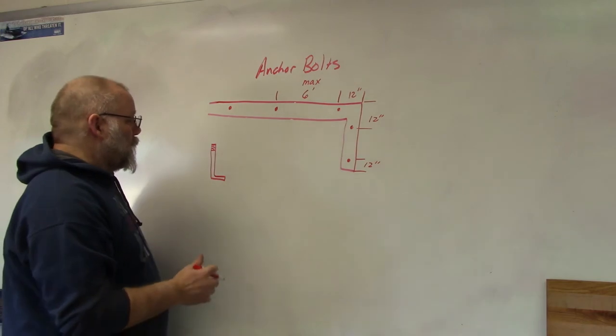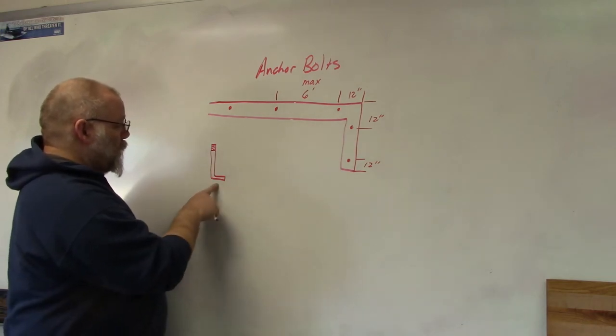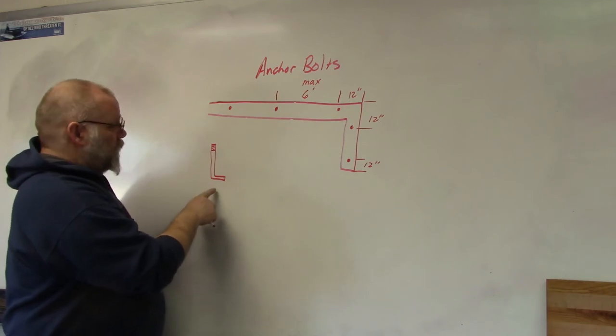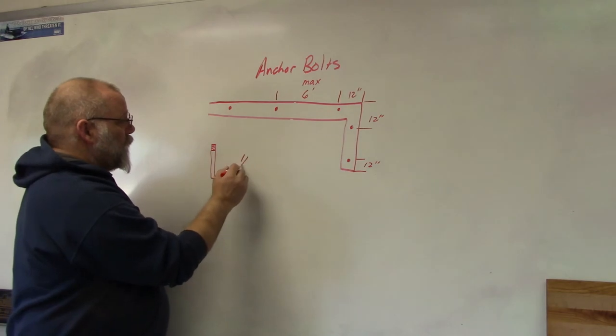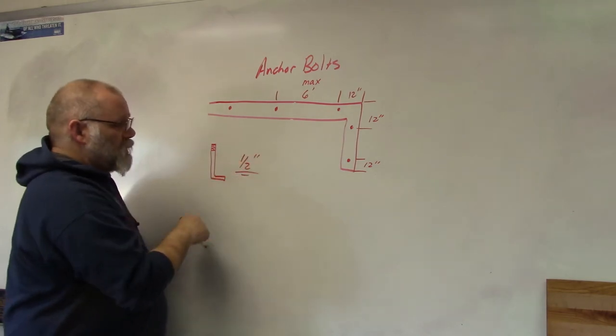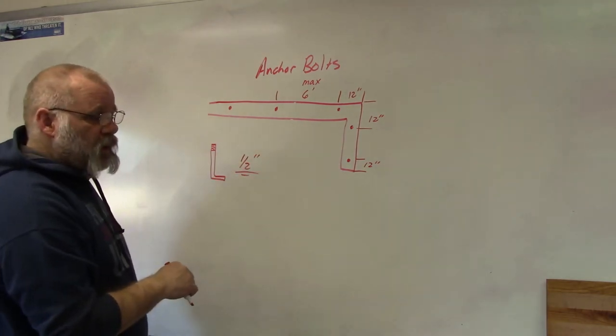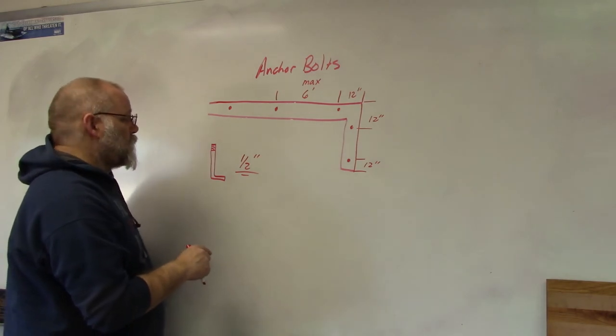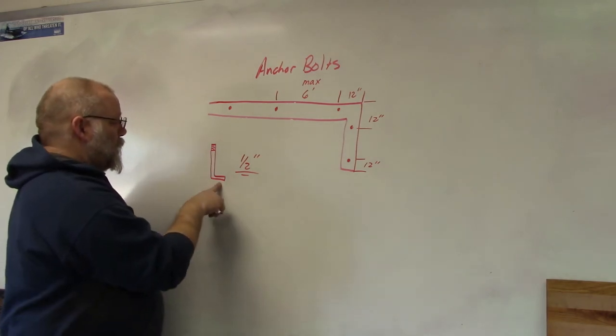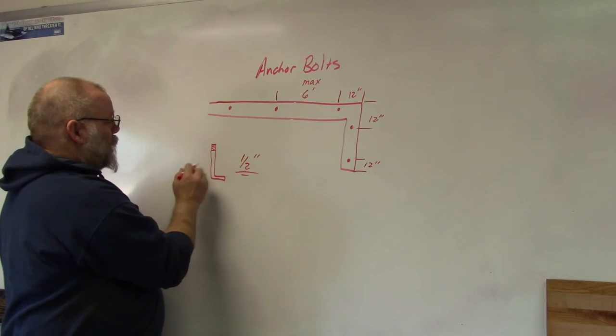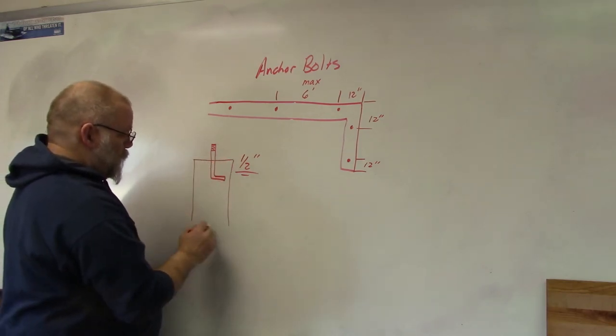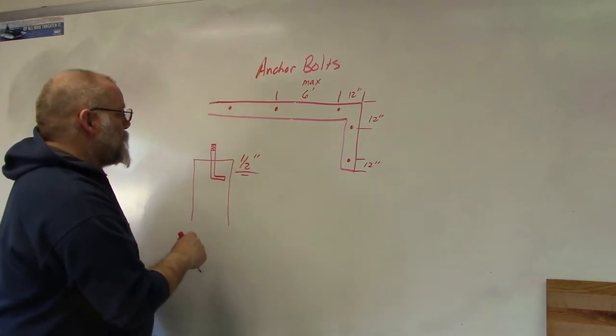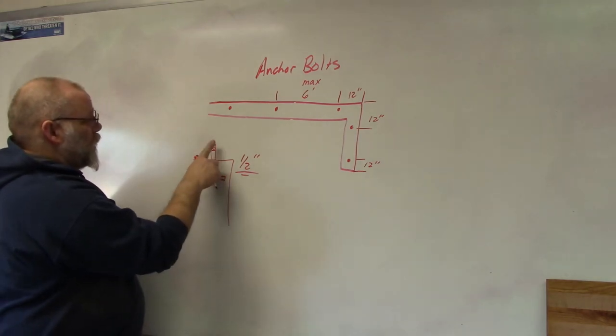What does an anchor bolt look like? An anchor bolt can be galvanized or steel, usually a half inch. Again, make sure you check your codes to make sure that you put in the correct size anchor bolts. They're shaped like an L, and when the concrete is wet, they're put into the wall so that they will stick up.